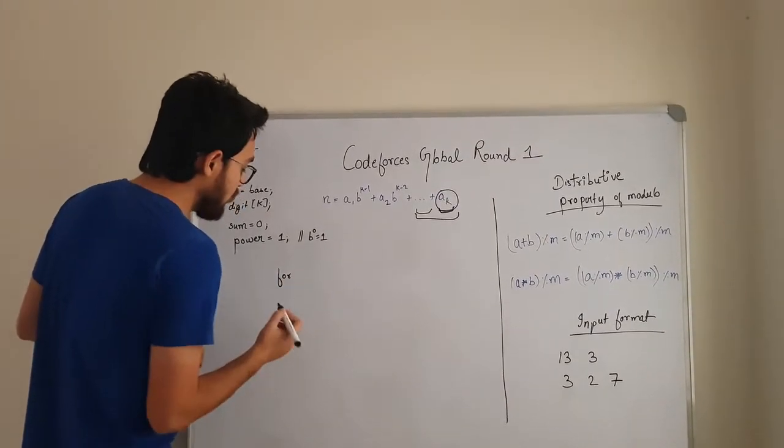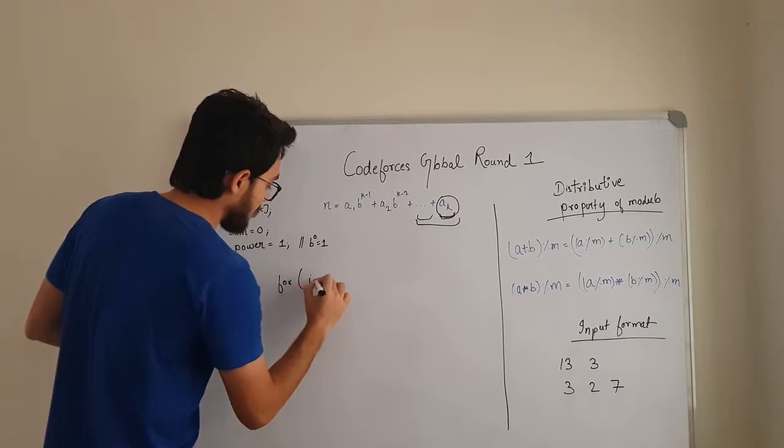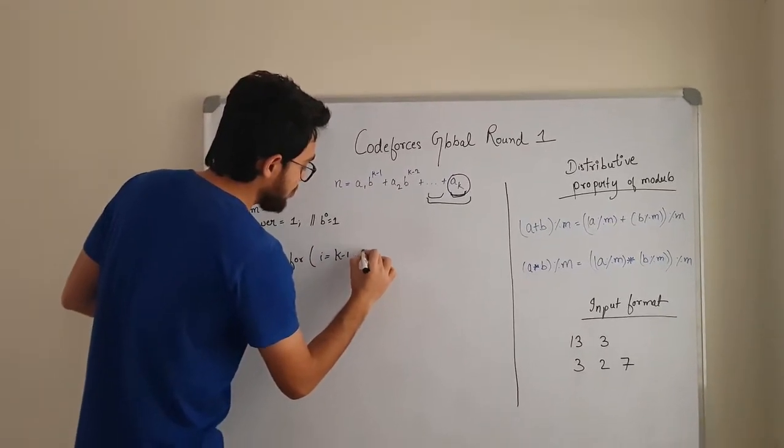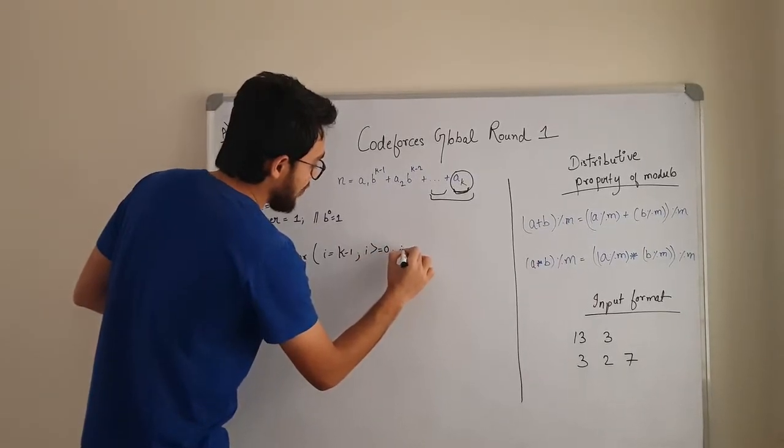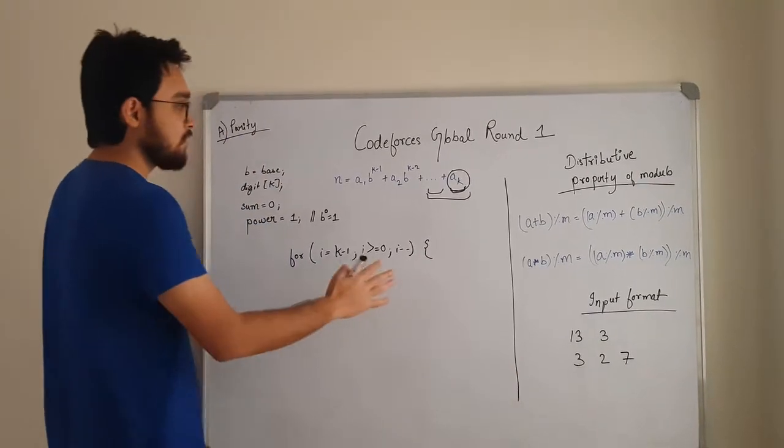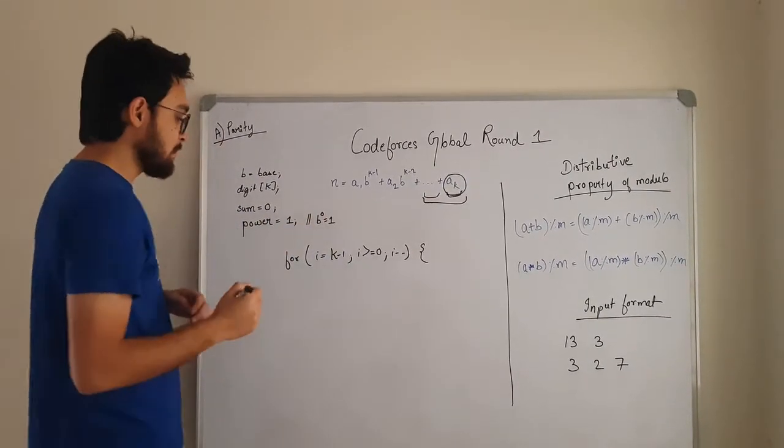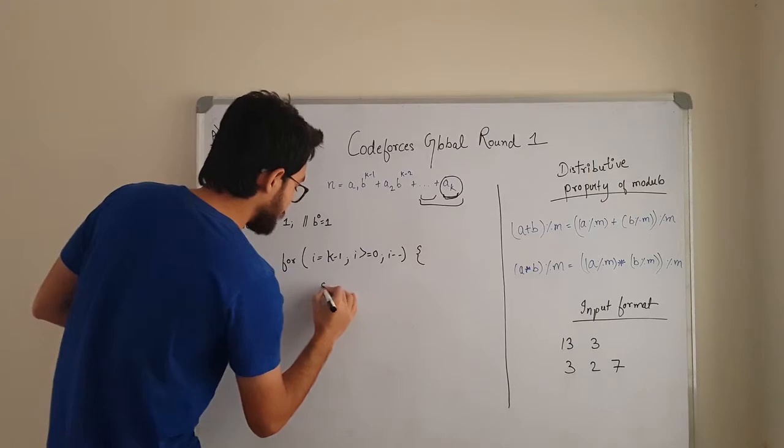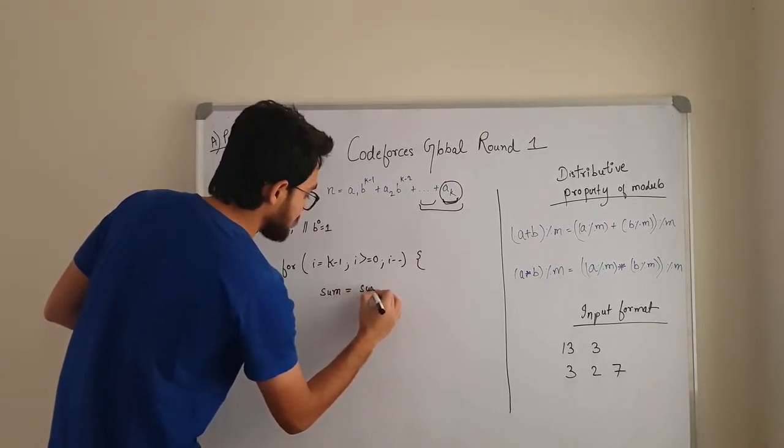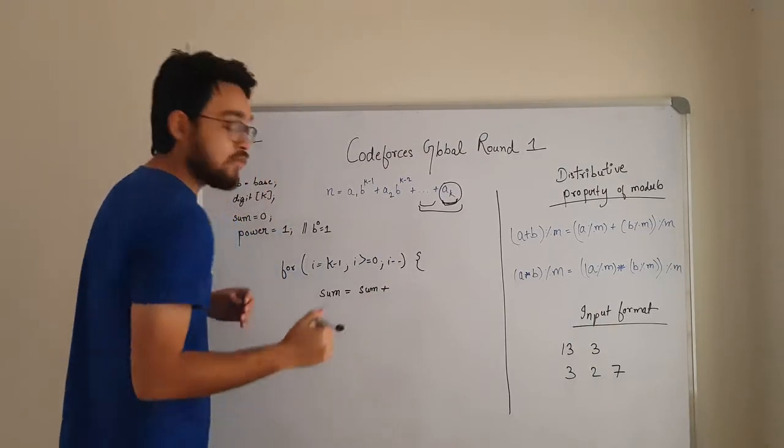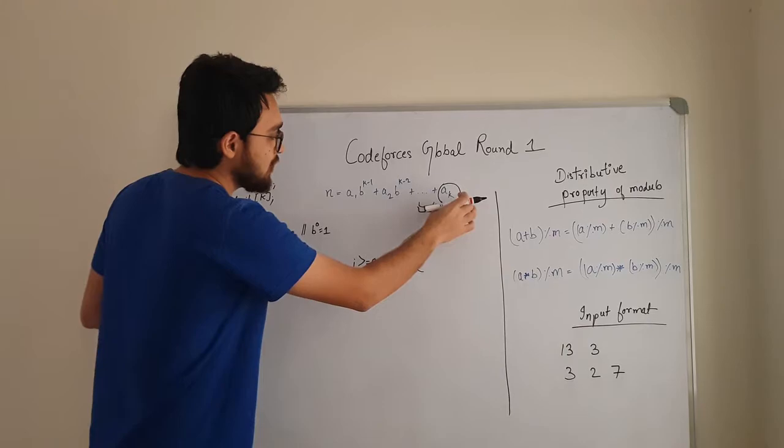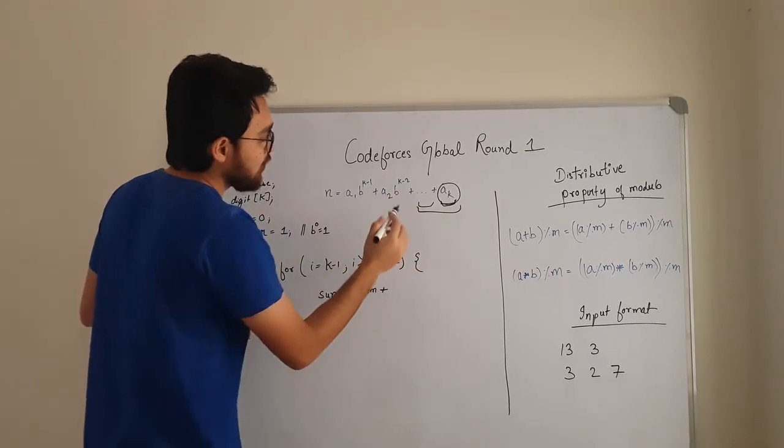So let's get into that. We will write a for loop. For i is equal to k-1, i greater than equals to 0, i minus minus. So in this we will iterate through this. And what we will do is, we will calculate our sum. So what this sum will be?